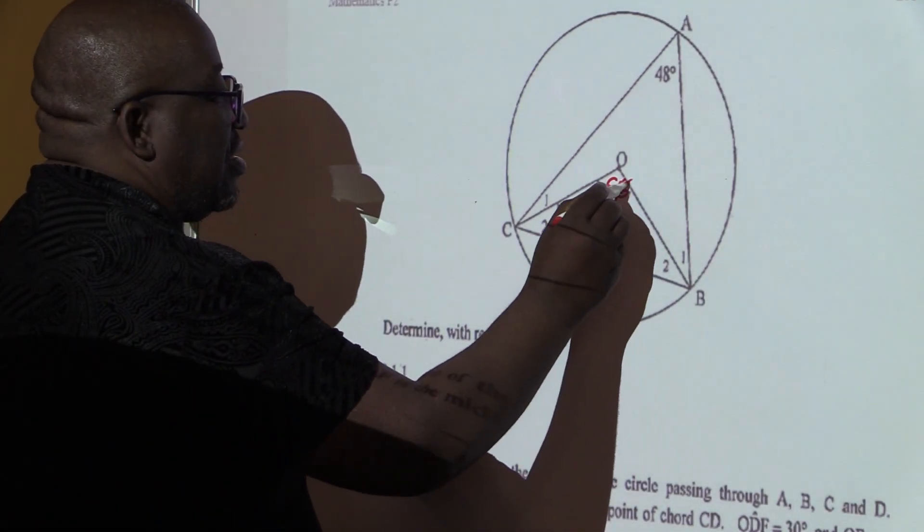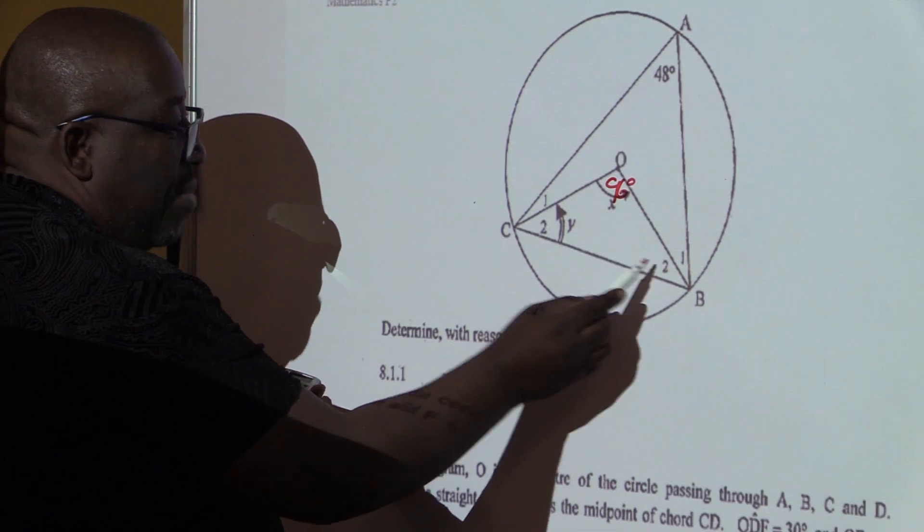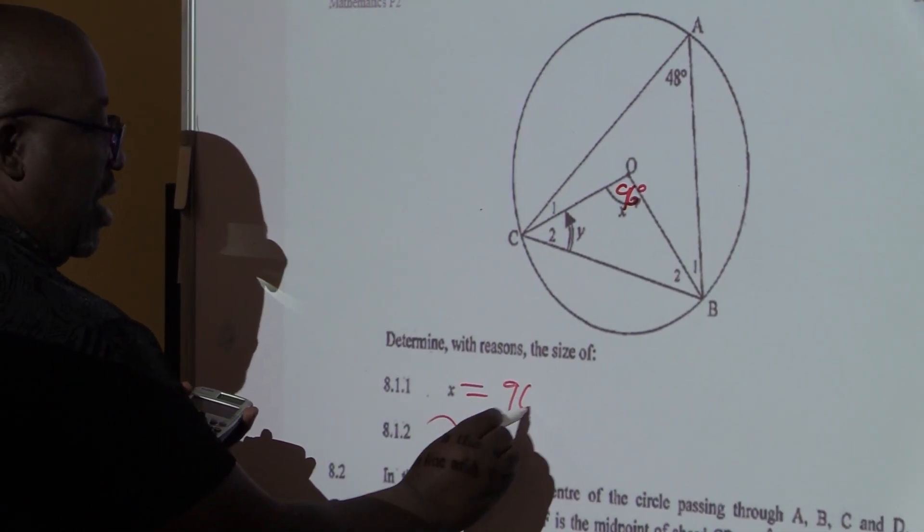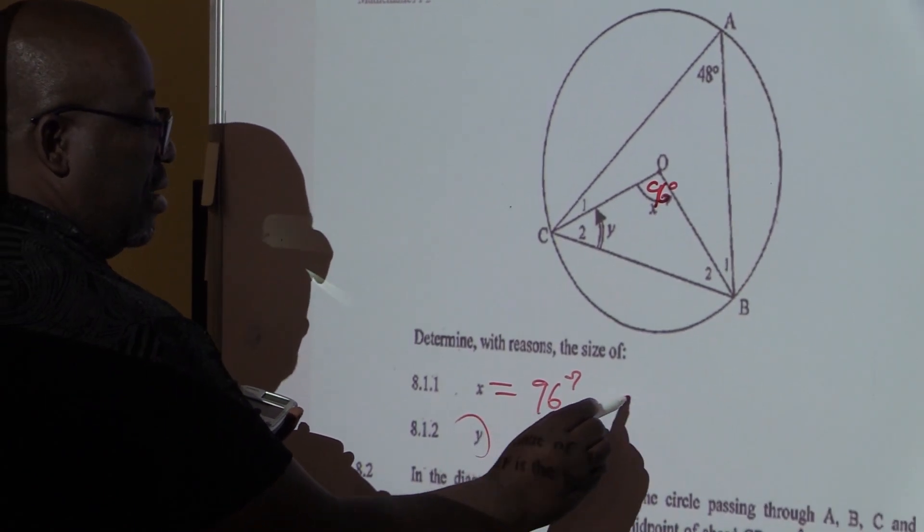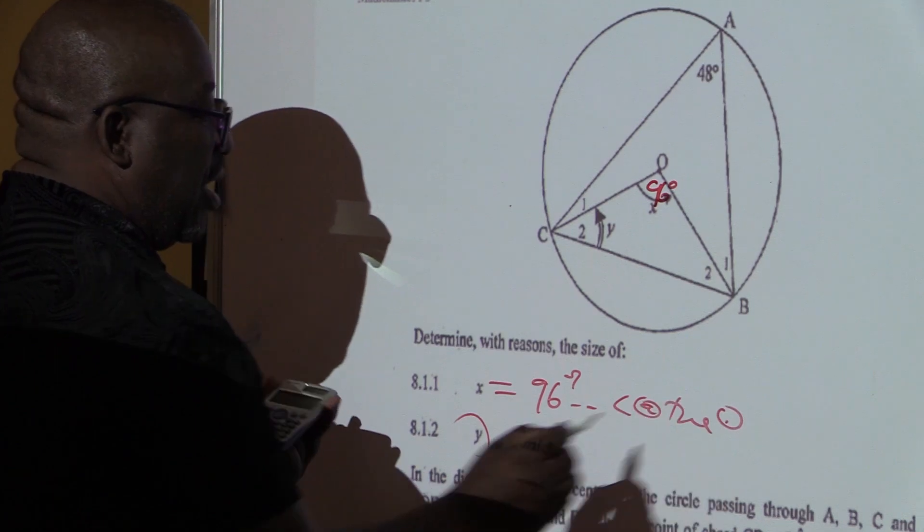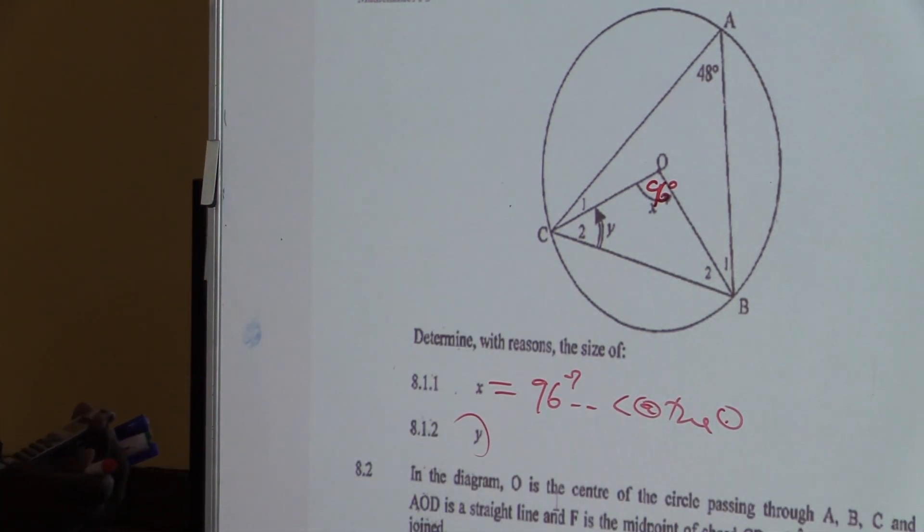So if this is 96 degrees, but this one is the same as this one, if I'm looking for the value of angle Y. We know that angle X is equal to 96 degrees. Angle at the center of a circle is twice the angle at the circumference. If angle X is 96, what is angle Y?